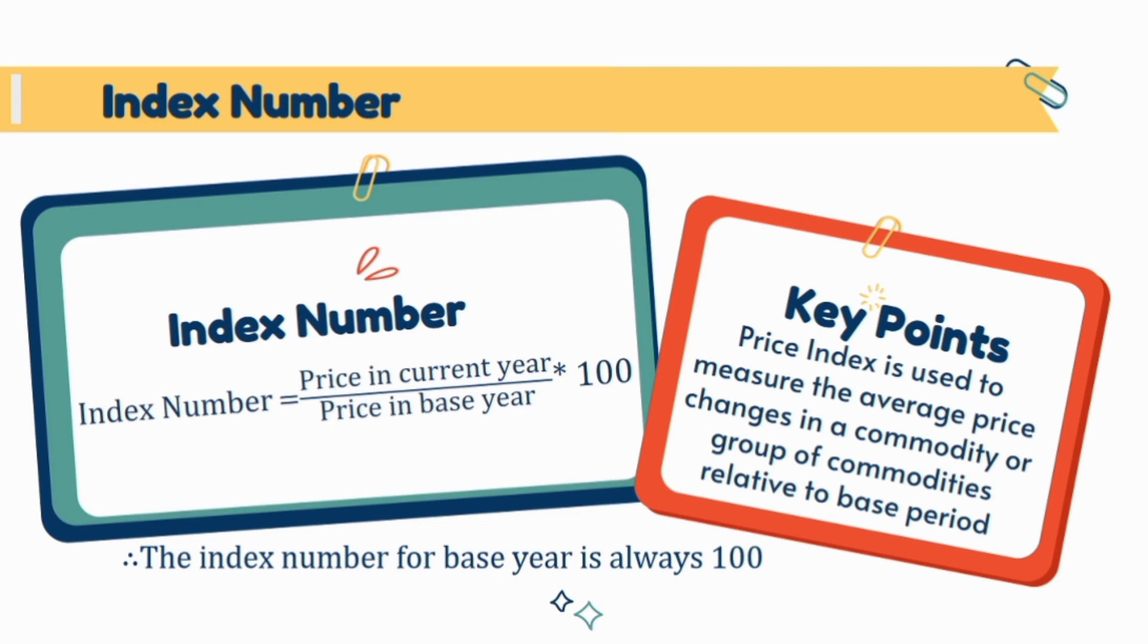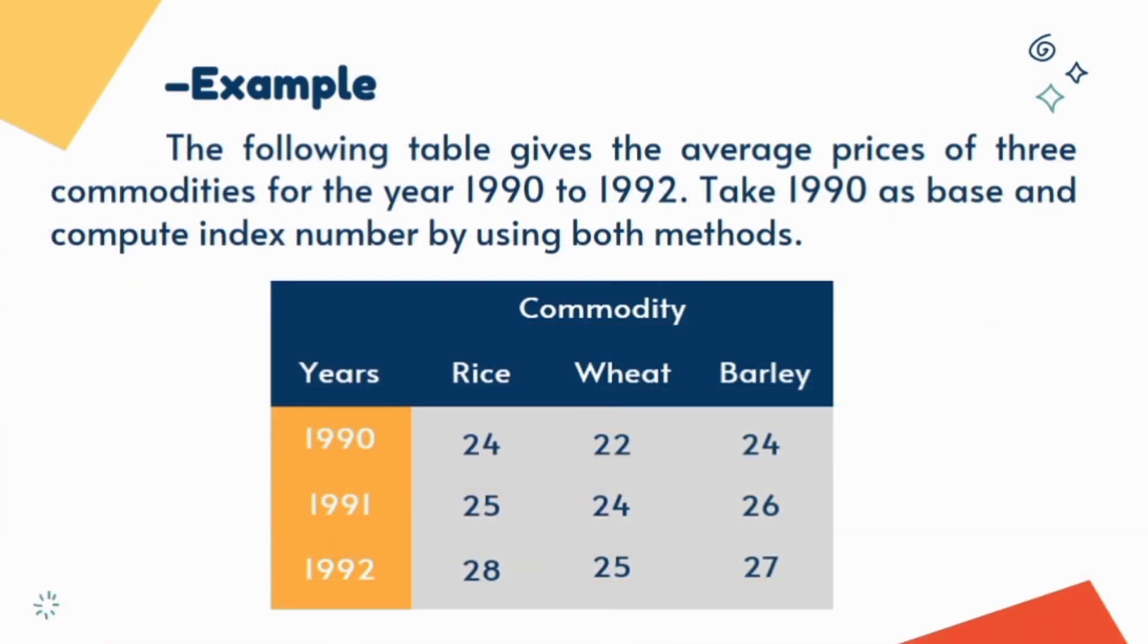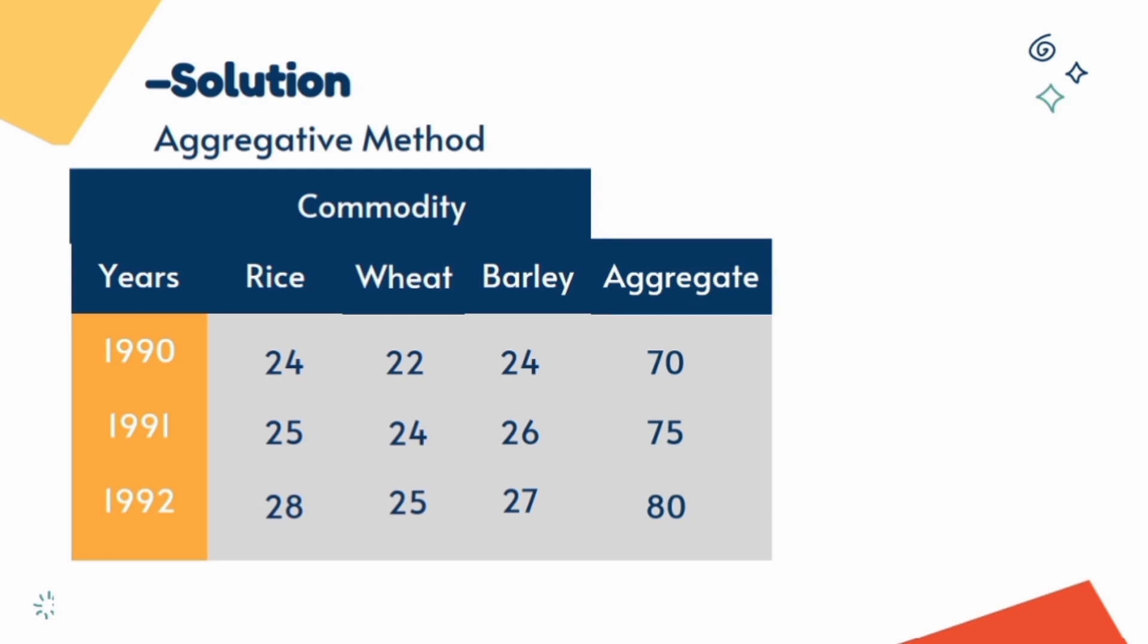Generally we use these two methods to calculate price index: the first one is aggregating method and the next one is average of relative method. In example, the prices of three commodities are given and we need to calculate index number by using aggregative method and average of relative method by taking 1990 as base. In aggregative method first aggregate all prices year wise and then calculate index number. As 1990 is base year means base value is 70 and for each current year now we calculate the index number.